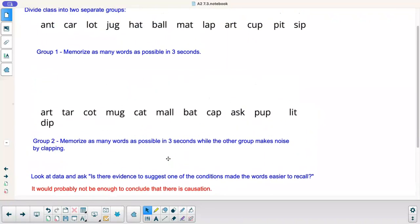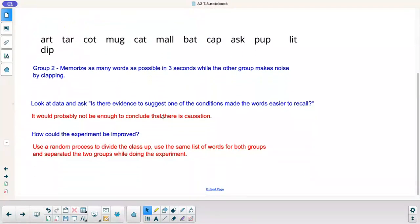I think using a random process to divide the class up rather than just say left side, right side, maybe everybody pulls a number out of a bag or something. And then you'd want to use the same list because these are different words. You never know, is one list have harder words to remember? Things like that. So you're going to want to use the same list. Maybe separate the groups too because the first group might get a practice shot. They're going to have different words, but they're practicing how to memorize it. Things like that would make that experiment much better.